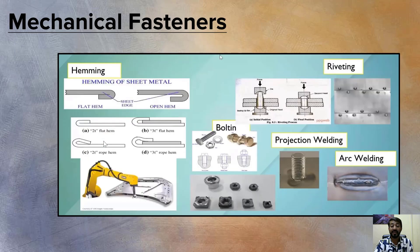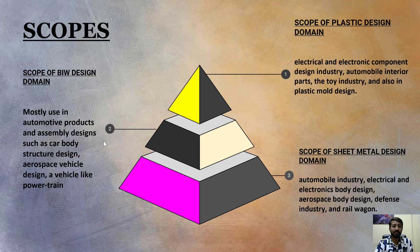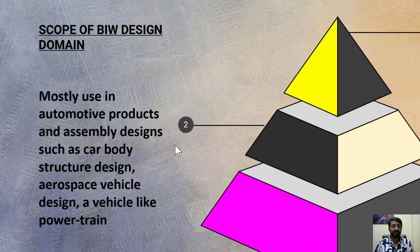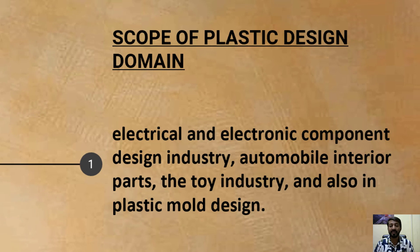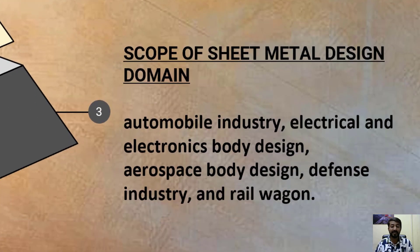The various mechanical fasteners include bolts, hemming, welding, and riveting. The scope of BIW is mainly in automotive products and assembly designs such as car body structure design and aerospace vehicles. The scope of the plastic domain covers electrical and electronic component design, automobile interior parts, the toy industry, and plastic mold designs. The scope of sheet metal design covers the automobile industry, electrical and electronics body designs, aerospace body designs, defense industry, and rail vehicles.